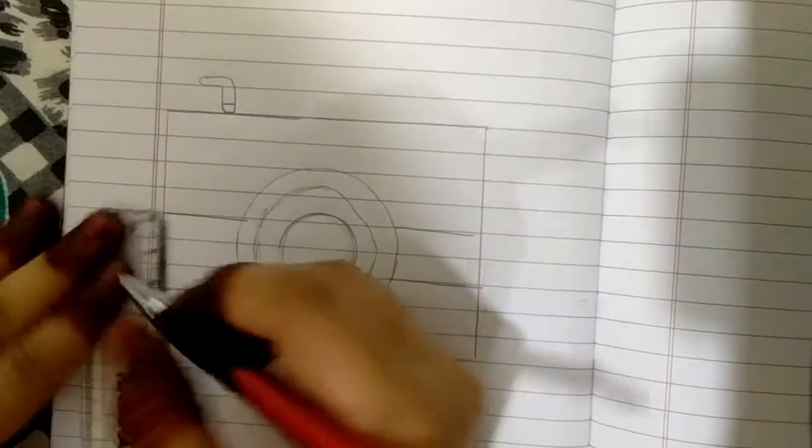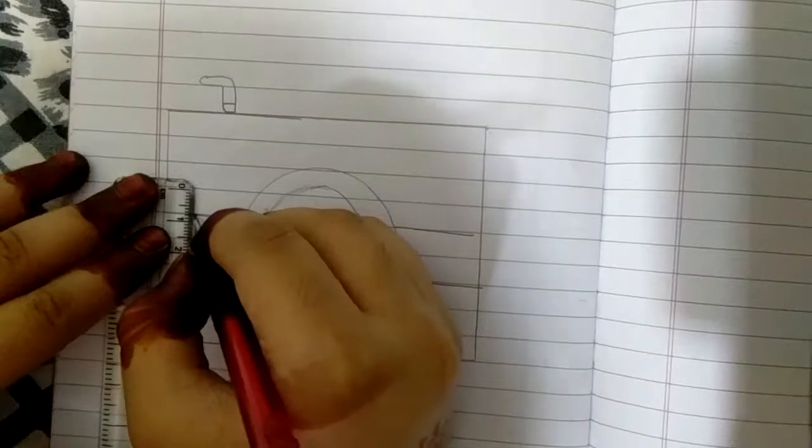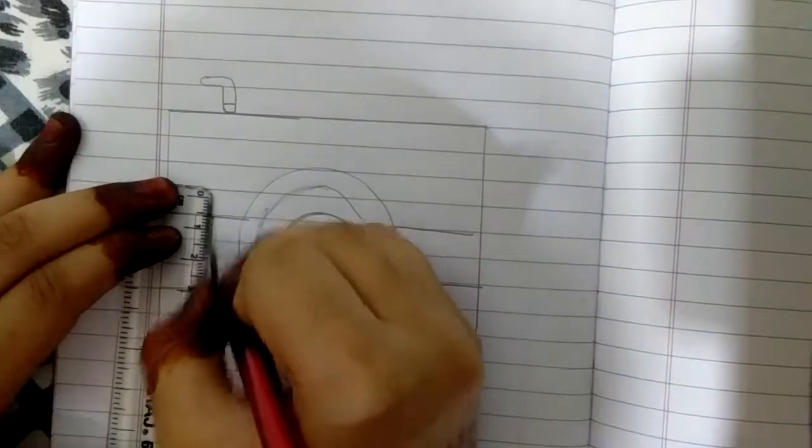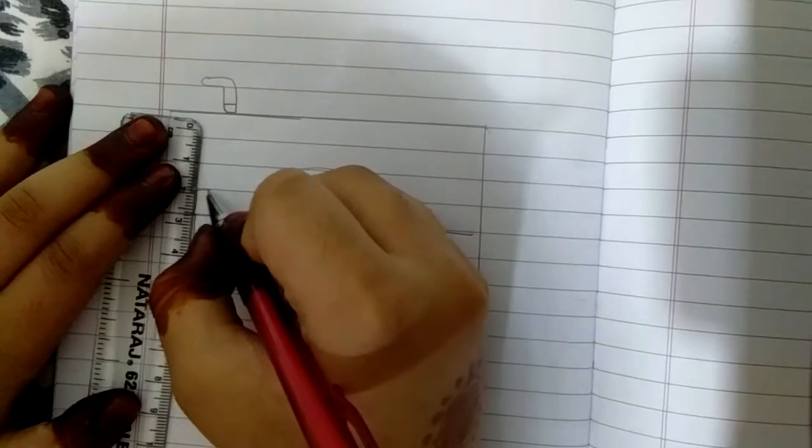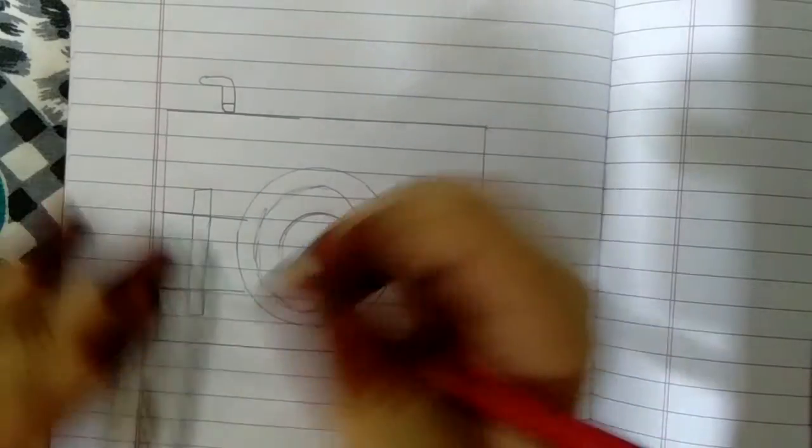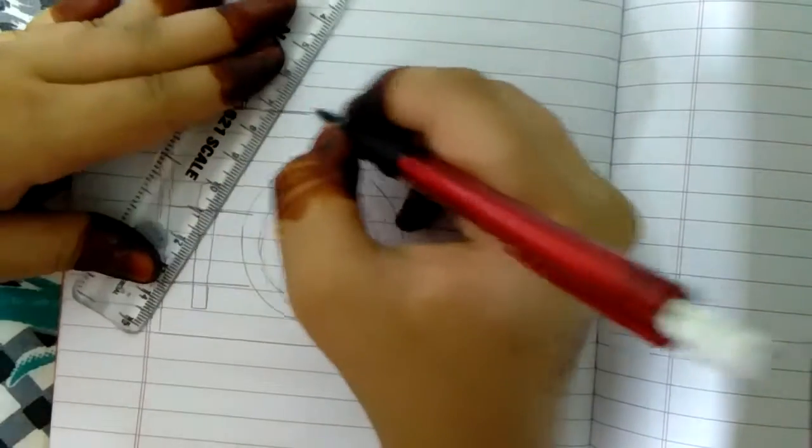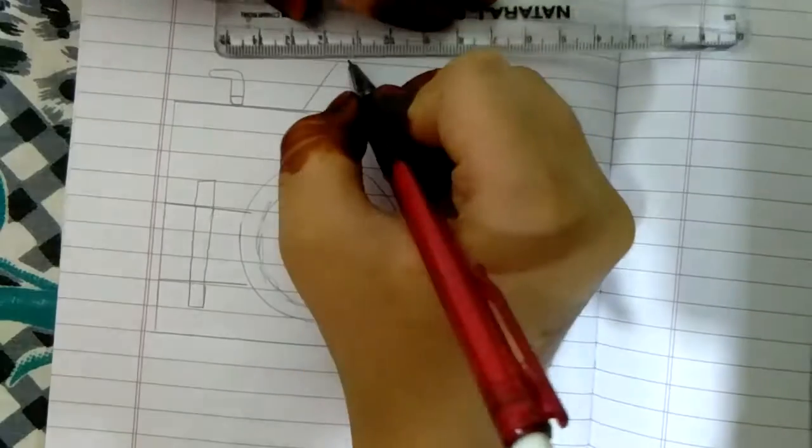Now the thing you need to draw is like this. You can obviously use color pencils to color it. I just don't color it because I don't like to, but you can do whatever you want. Now you need to draw that shutter type of thing, so let's do it.